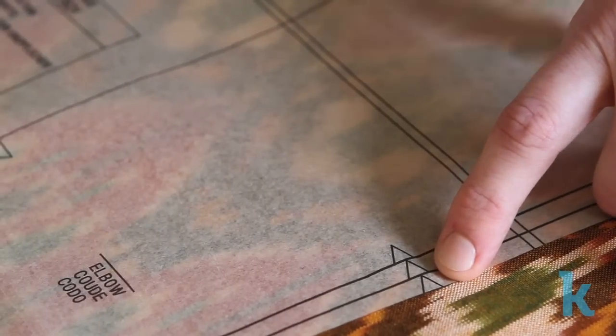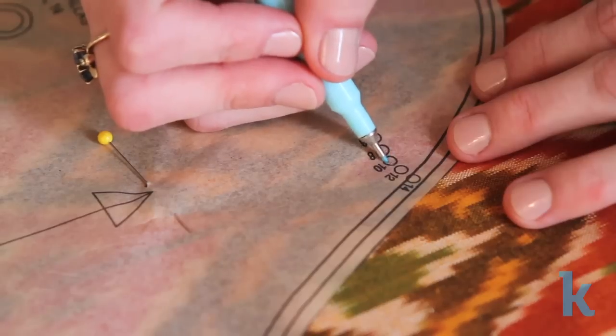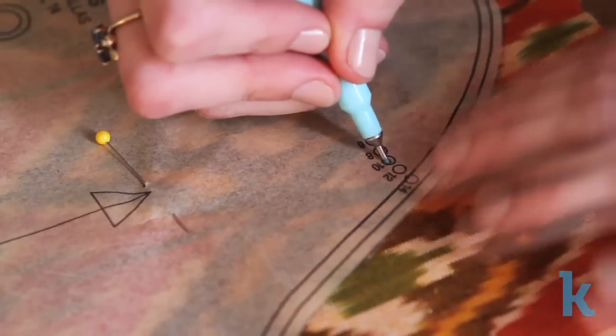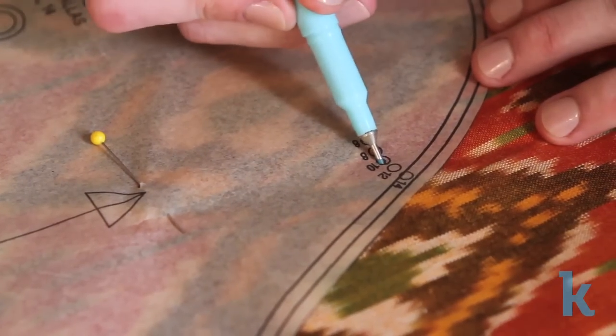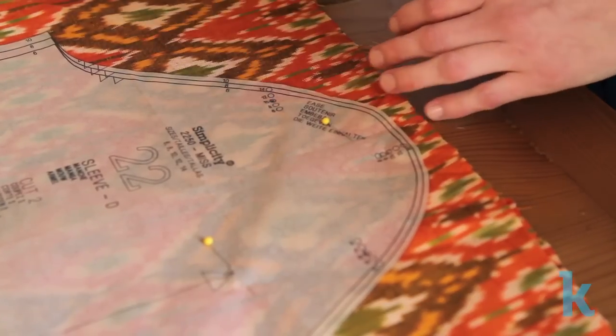Next, make sure you mark all the registration points found on the pattern. These can be in the form of notches or triangles along the pattern's edges or dots on the pattern's interior. It's up to you how you mark these, but make sure you use temporary marking tools so they can come off later.